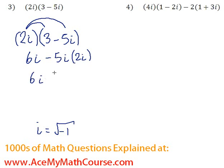So negative 5 times 2 is just negative 10. And we get i squared, i times i.